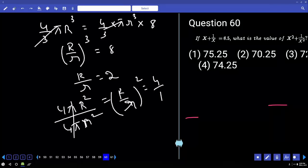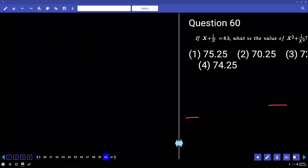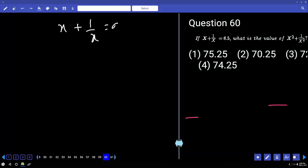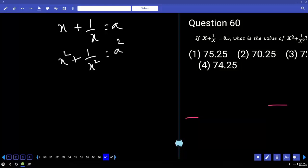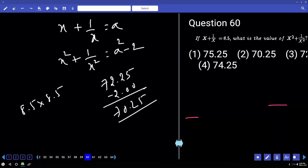If x plus 1 by x is equal to 8.5, what is the value of x square plus 1 by x square? This question is of the form x plus 1 by x is equal to a. Then find x square plus 1 by x square. Come on. A square minus 2. A square, 8.5 into 8.5. Treat it as 85 first. Only 85 and 40. What is the square of 85? 8 into 9 and 5 square. 72, 25. Or 72.25. You have to subtract 2. 70.25.